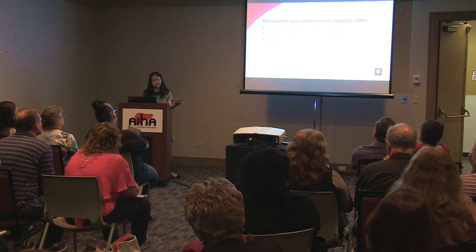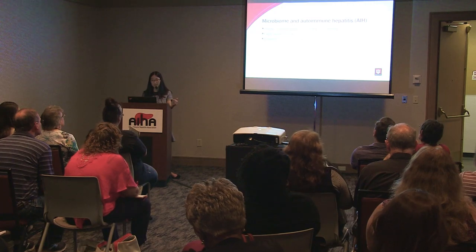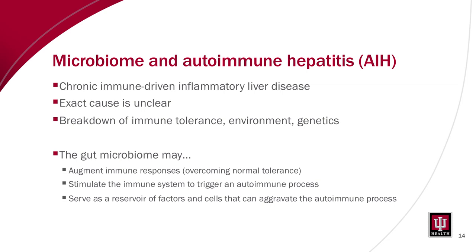So how does this relate to autoimmune hepatitis? AIH is considered an immune-driven inflammatory liver disease; its exact cause is unclear but involves factors like breakdown in immune tolerance, environment, and genetics. The gut microbiome could potentially augment immune responses, contribute to overcoming normal tolerance in individuals at risk, and components of the microbiome could stimulate the immune system or trigger the autoimmune response. It's a vast and complex community that serves as a reservoir of different factors and cells that can aggravate and potentially drive this autoimmune condition.